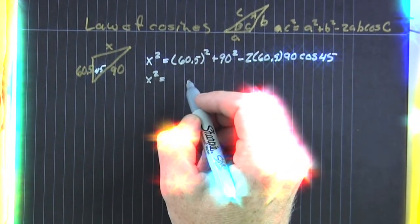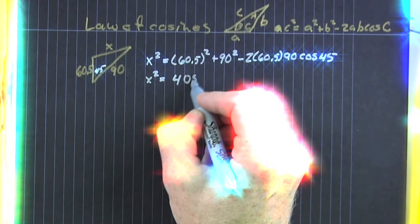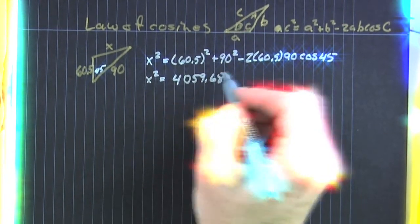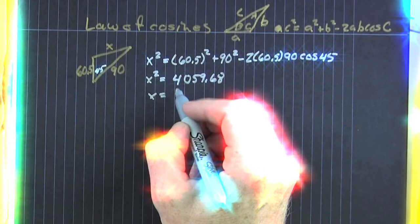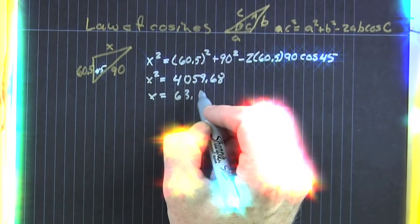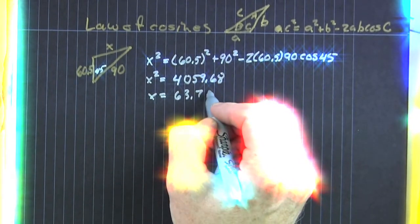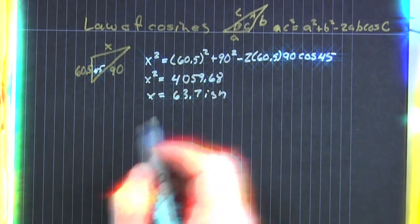x squared turns out to be 4,059.6-ish. Check me on that. We take the square root, and we find that that's going to be about 63.7-ish feet.